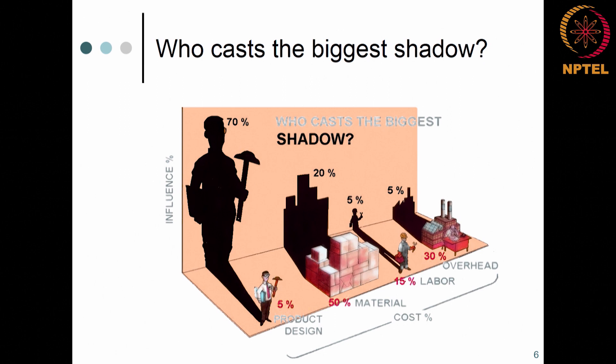You can actually reduce costs by increasing your time in the design stage. If you intelligently design it, you can reduce your labour time and hence the overhead. If you foresee where there could be issues with overhead, you can actually reduce it by spending more time in the design stage.